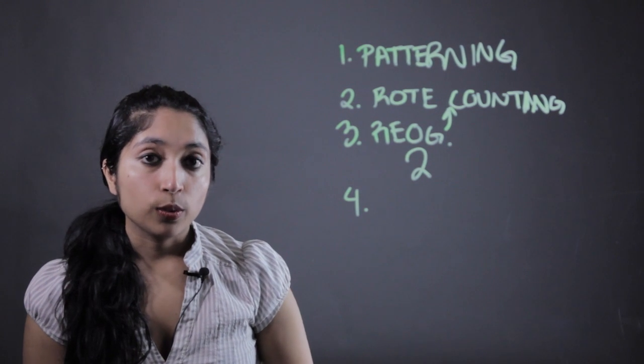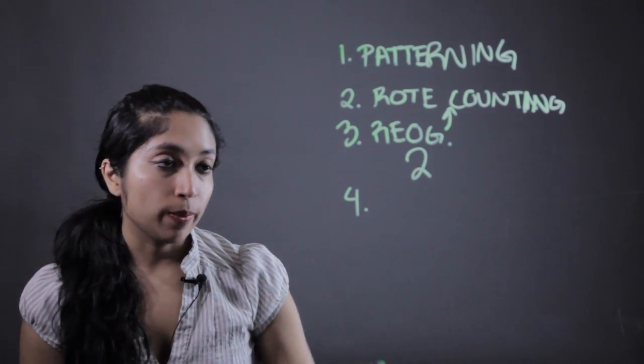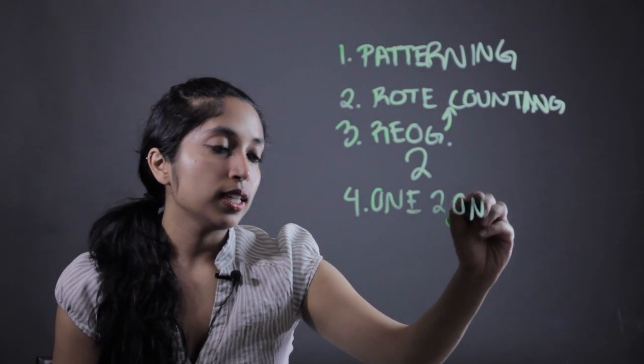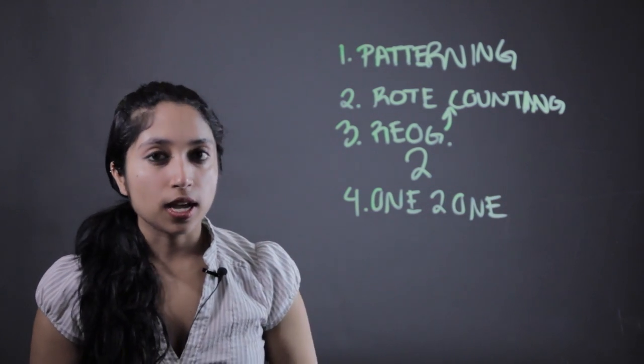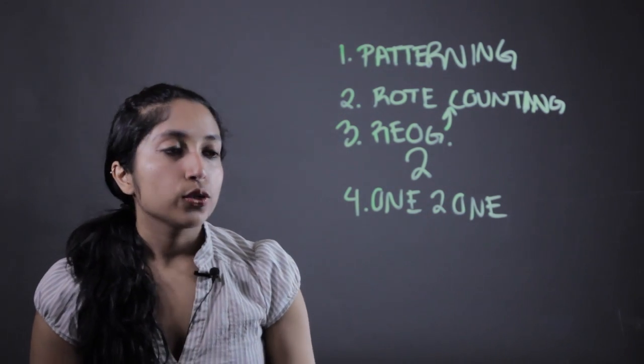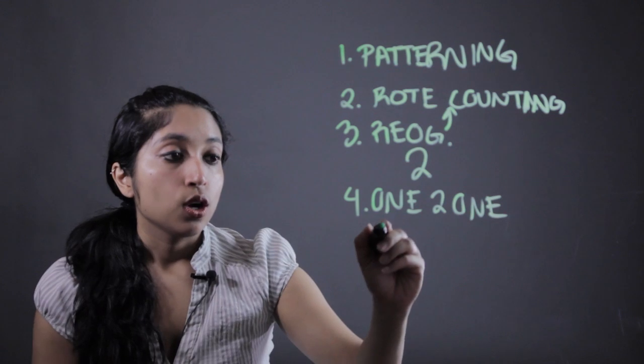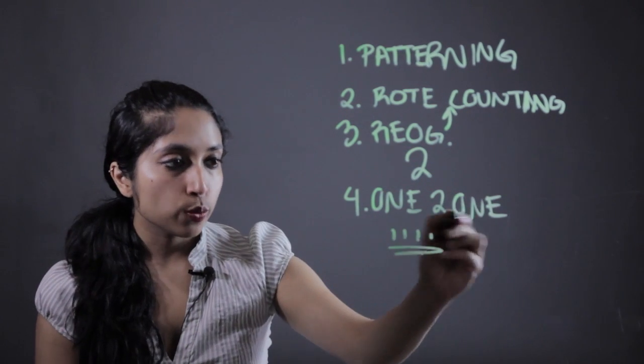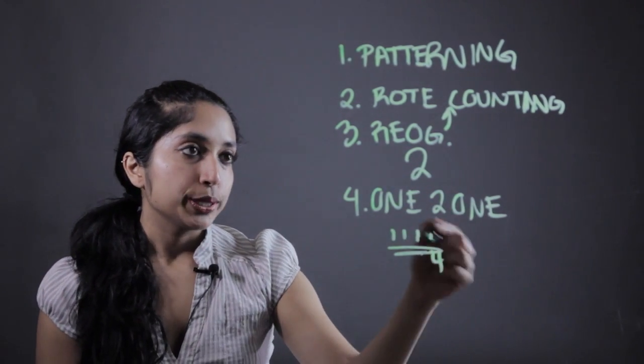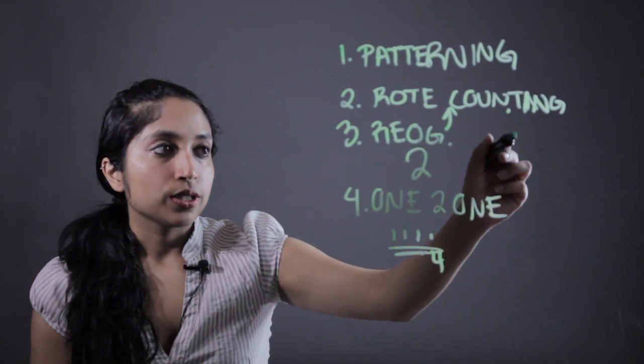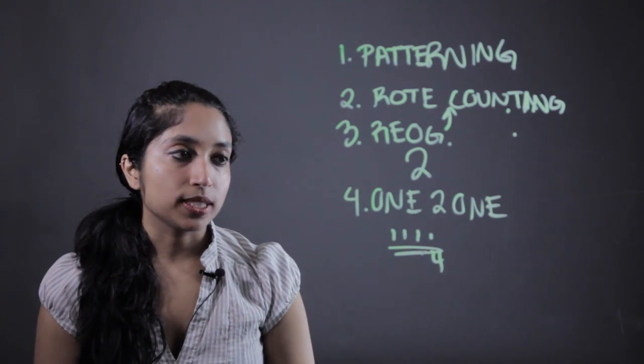And then the fourth thing that we're going to want to work on is one to one correspondence. And this is basically going to help us finally understand what those numbers we've been learning means. So that's like if you're physically counting out like one, two, three, four, oh that's what the number four is. It's a one to one correspondence just trying to get them to understand what these numbers mean that we learned in these first two steps.